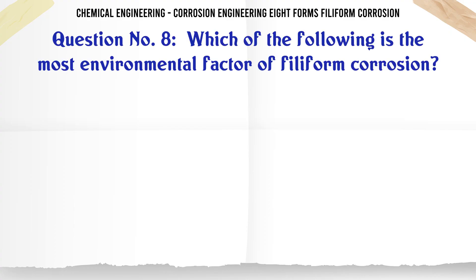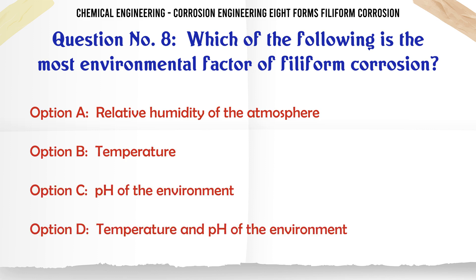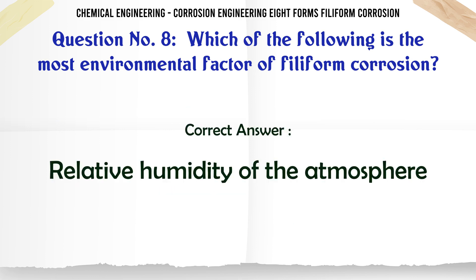Which of the following is the most important environmental factor of filiform corrosion? a. Relative humidity of the atmosphere. b. Temperature. c. pH of the environment. d. Temperature and pH of the environment. The correct answer is a: relative humidity of the atmosphere.